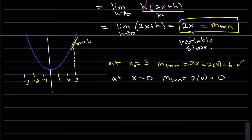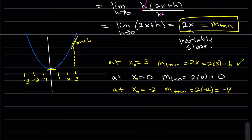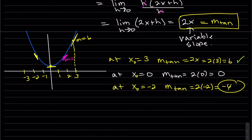At x equals zero, the slope is zero. At x equals negative two, the tangent isn't as steep as at three and it's decreasing, so the slope is negative — and we can see it's negative. For other slopes: at x=2, m=4; at x=0, m=0; at x=1, m=2; at x=-1, m=-2 — same magnitude but opposite direction.